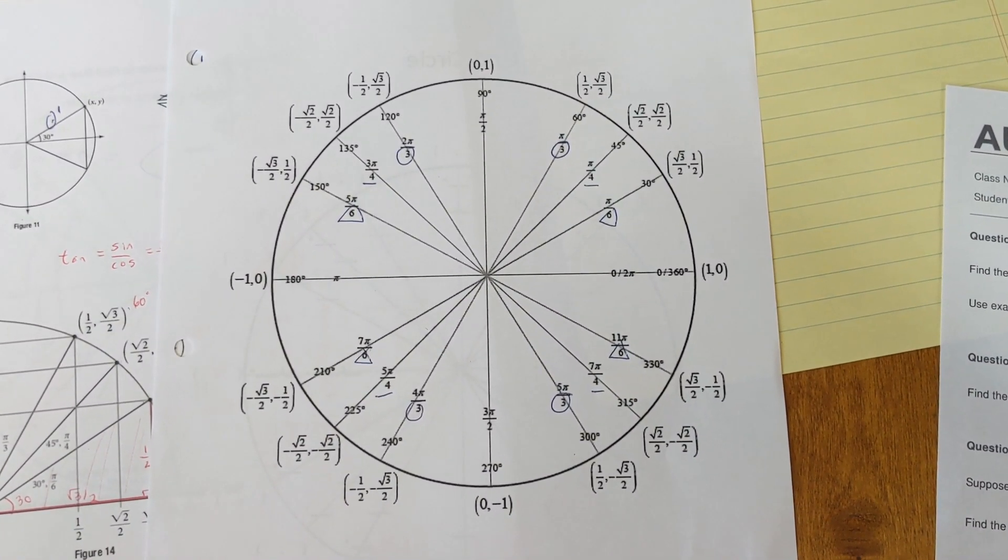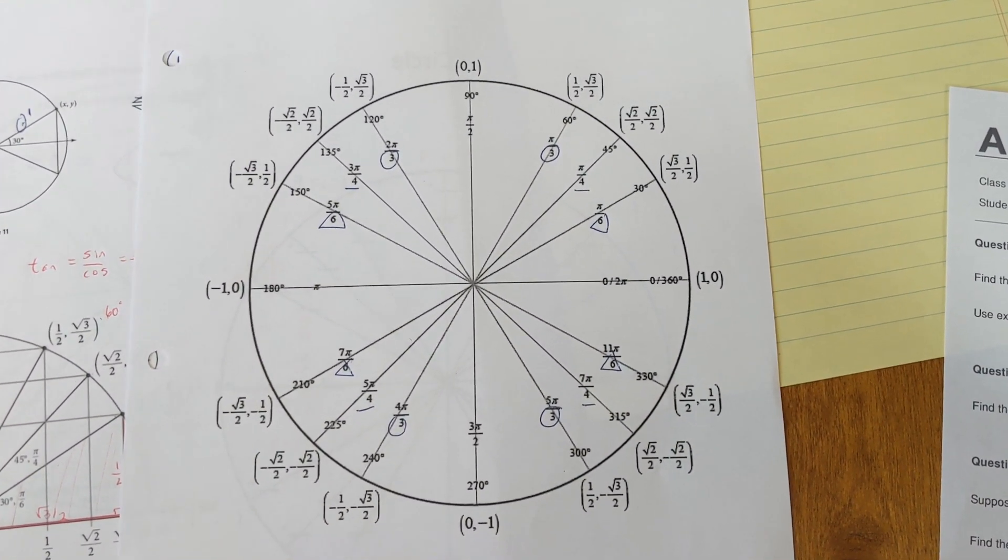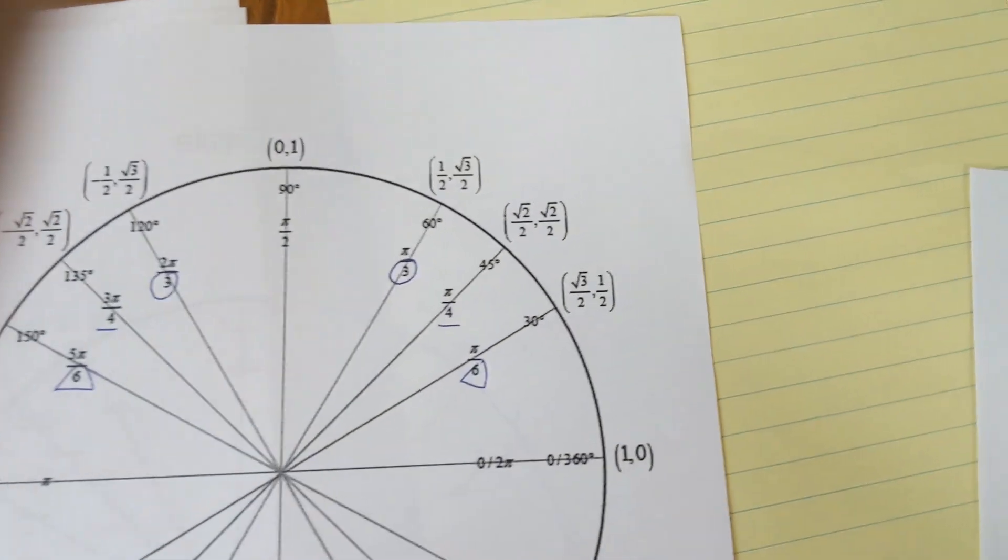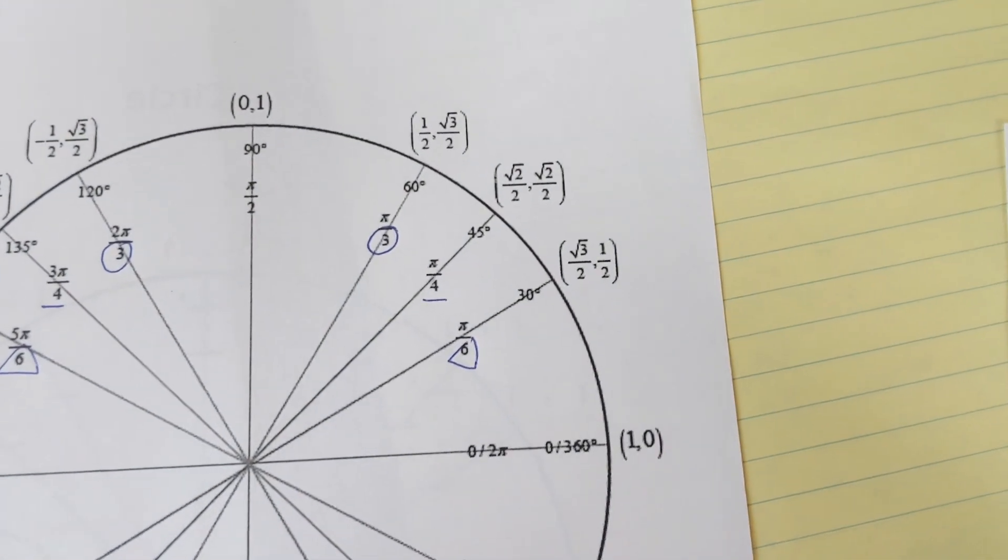Before we left for break, we were working on the unit circle. And what we learned before break about the unit circle is if you could memorize quadrant 1, you know the whole entire unit circle.